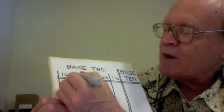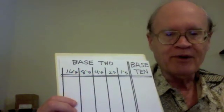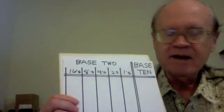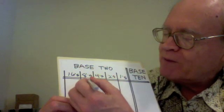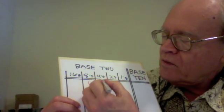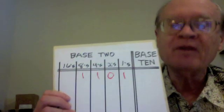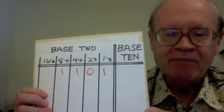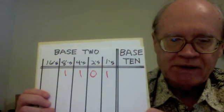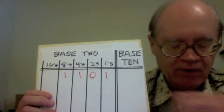And if I had room on the paper, what would the next one be? It would be 32, and so on indefinitely. So, as an example, suppose we have 1, 1, 0, 1 as a base 2 number. What does that mean to us? Well, it's easy to figure out when you have ones. It means 8 plus 4 plus 1, which is 13.